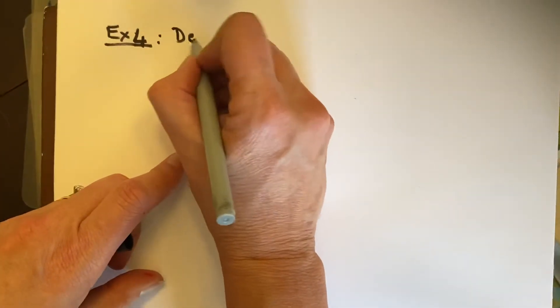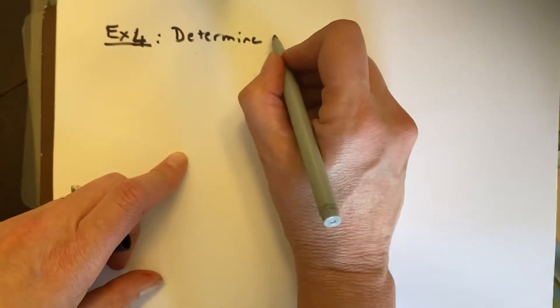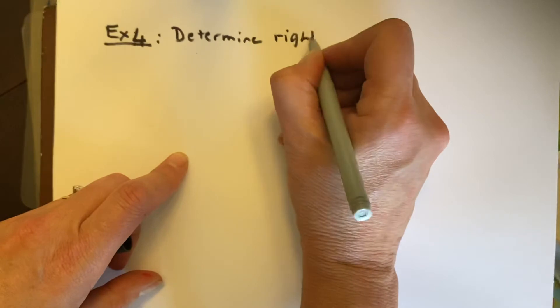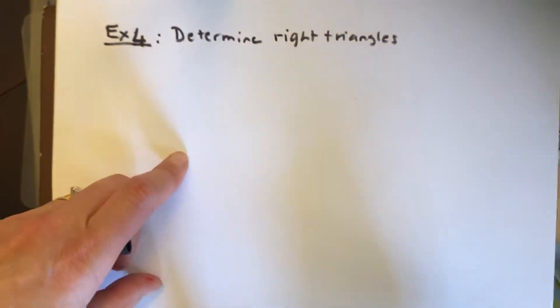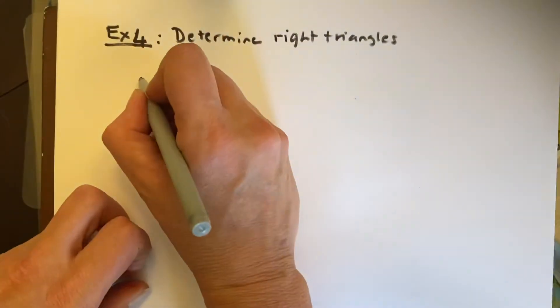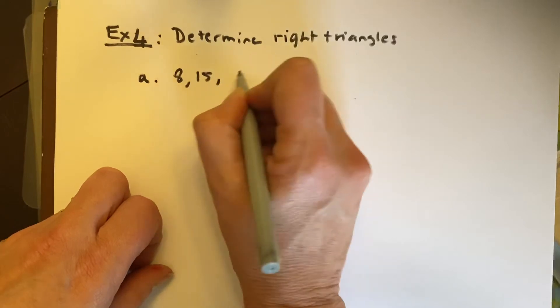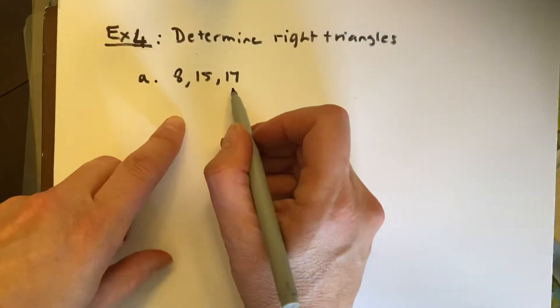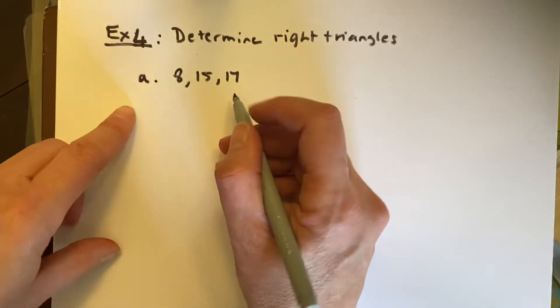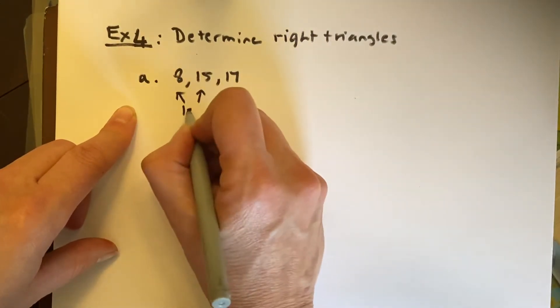So example 4 is determine right triangles. How do we know? Well, we've been given all the tools to find out. So part A says we've got three sides, 8, 15, and 17. And we know that the hypotenuse is always the bigger side. And so this 8 and 15 have to be the legs.